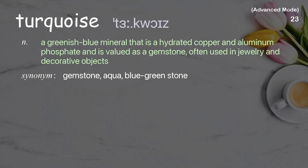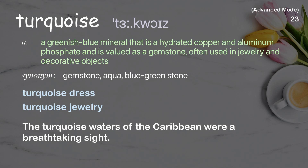Turquoise: a greenish blue mineral that is a hydrated copper and aluminum phosphate and is valued as a gemstone, often used in jewelry and decorative objects. Examples: turquoise dress, turquoise jewelry. The turquoise waters of the Caribbean were a breathtaking sight.